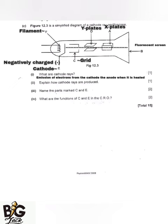Question two asks: explain how cathode rays are produced. Cathode rays are produced when the cathode is heated by the filament. Once the cathode is heated, it produces electrons, since it is negatively charged. Those electrons are then attracted to the anode. So the cathode produces cathode rays when it is heated by the filament, which is part F.